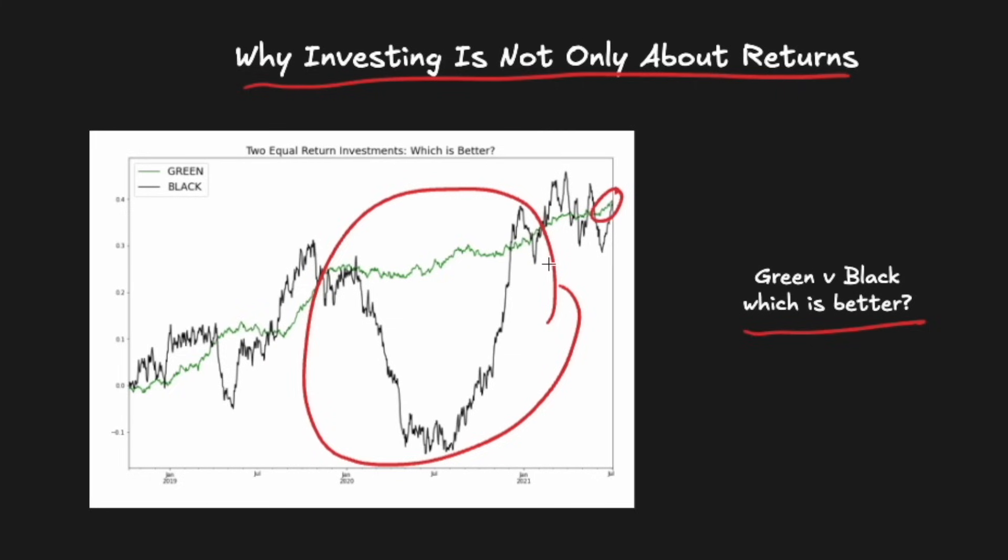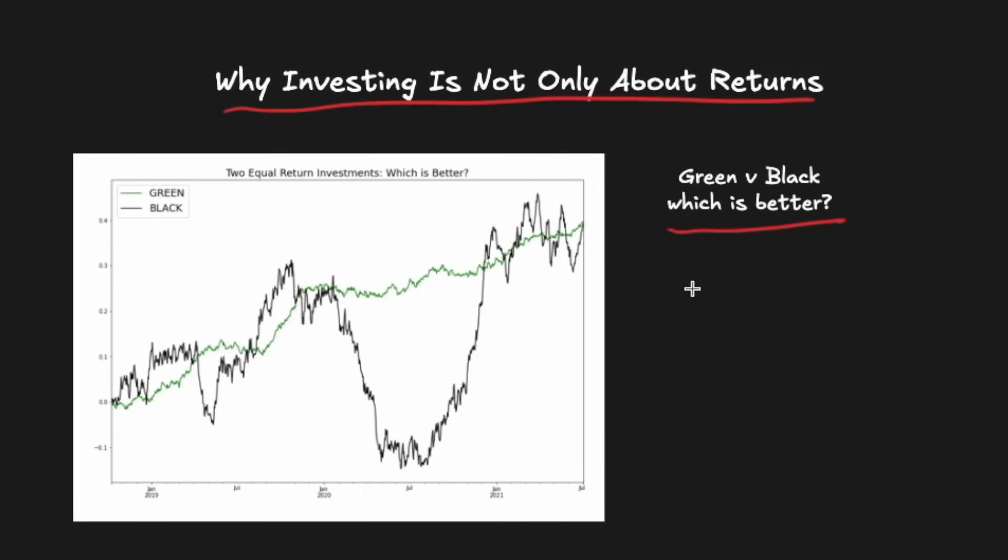You probably already intuitively know that these wiggles that black has are bad. Here are a few reasons why. The first reason the wiggles are bad is that it makes black a lot more painful to hold. Sure, sometimes it is beating green, but other times it underperforms by a lot. In particular, it would be incredibly scary to be all the way down here, not knowing if and when you'll ever recover your investment. From basics of trading psychology, we know that these losses are going to loom larger than any gains and make the holding experience a lot more painful for black.